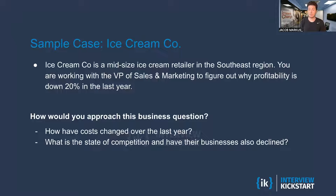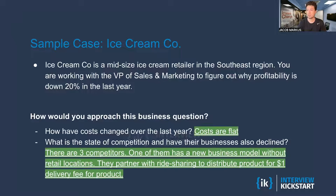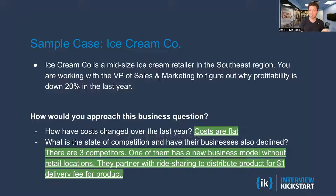Secondly, what is the state of the competition? Have businesses declined across the board for ice cream, or is this something that's uniquely impacting us? Hopefully you get an answer from the interviewer. In the first case, costs are flat — that's a bit of a dead end, but we know that mostly what's happening here is probably revenue related. There are three competitors; one of them has a new business model without retail locations. They partner with ride sharing to distribute product for a dollar delivery fee. So we might be focused more on revenue and the competitive landscape.